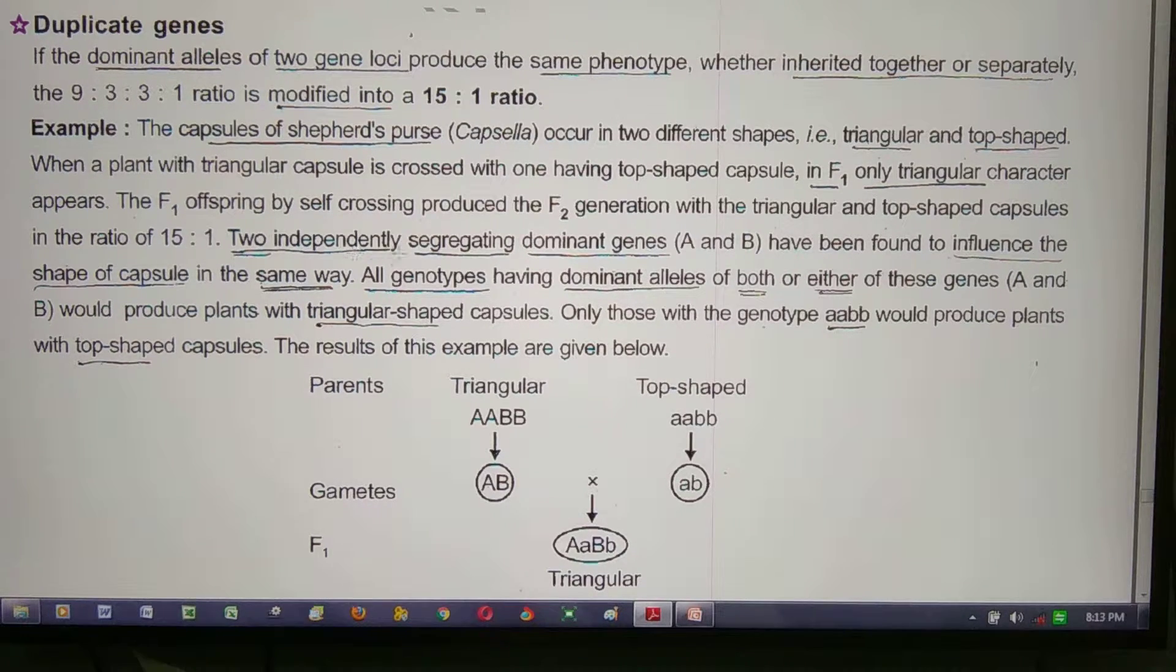Two independently segregating dominant alleles A and B have been found to influence the shape of capsule. All genotypes having dominant alleles of both A and B would produce plants with triangular-shaped capsules. Only those with the genotype aabb would produce plants with top-shaped capsules.